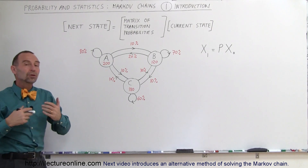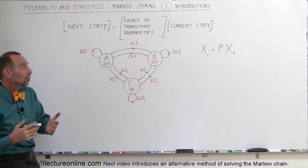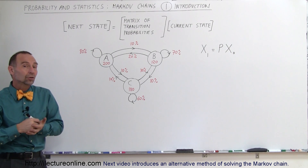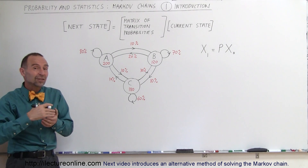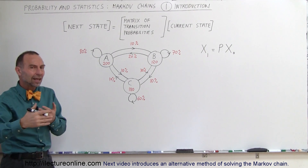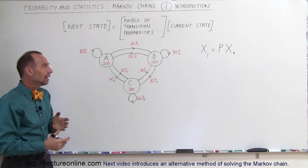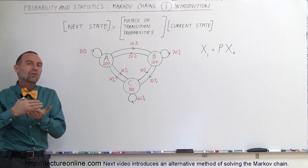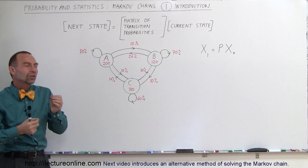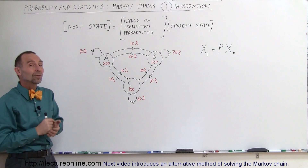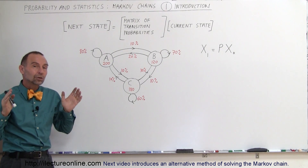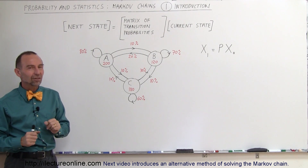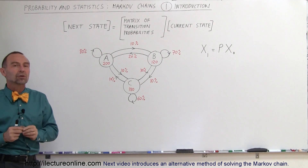If that's the case, what will be the number of customers in Store A, B, and C the following week? And what will be the number of customers that will go to A, B, and C the week after that, and the week after that? If the probabilities stay the same, we can predict over time what the customer base will be for each of the three stores. Eventually they will converge to a particular number if the conditions remain the same.